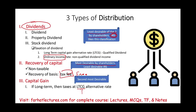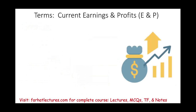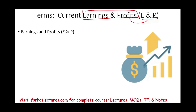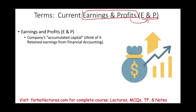To determine whether a distribution is a dividend, recovery of capital, or capital gain, we need to learn about certain terms — starting with current earnings and profit (CEP), which leads us to earnings and profit (E&P). What is earnings and profit? Earnings and profit is the company's accumulated capital. Think of it as retained earnings from financial accounting, but it's not the same.